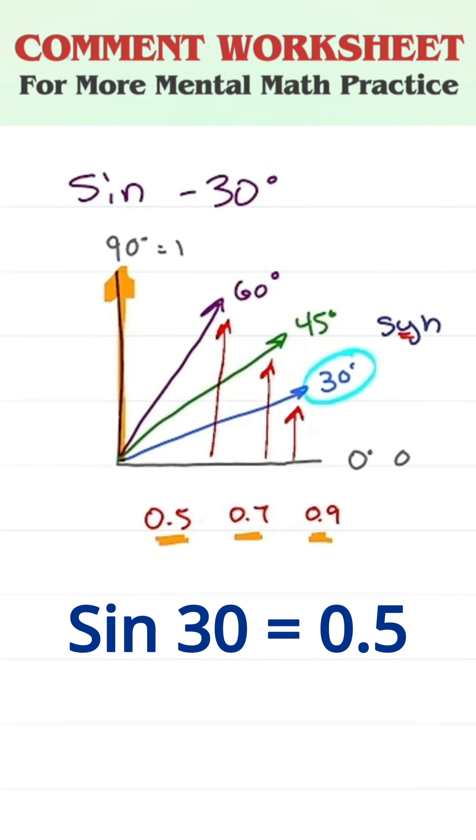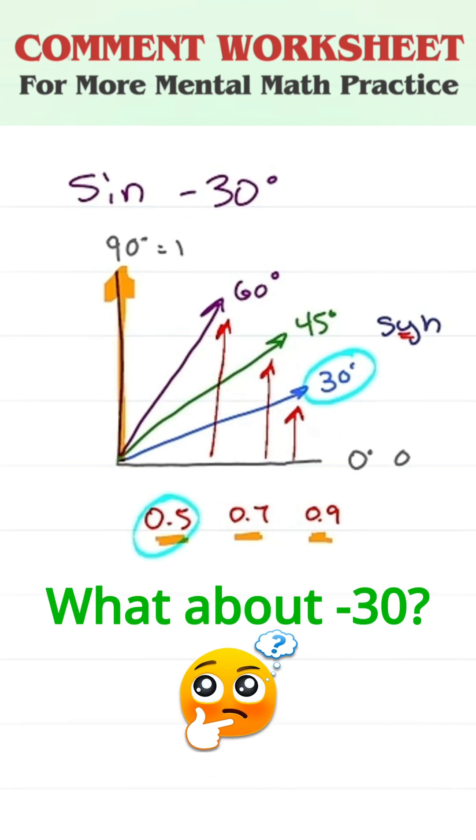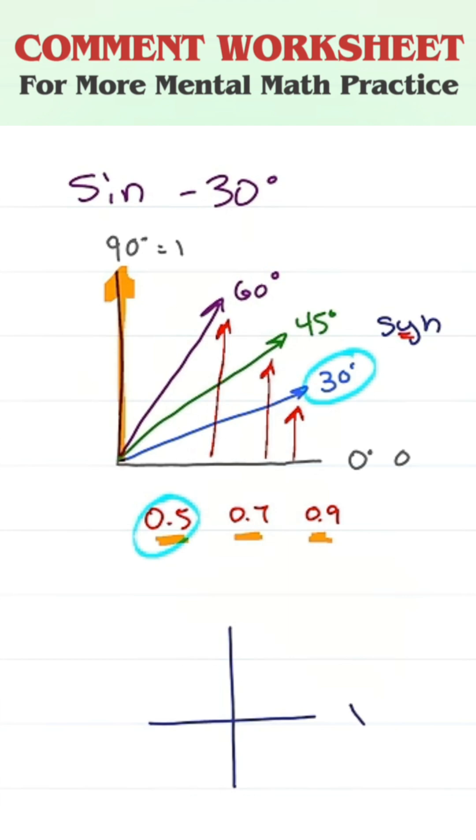So we know that sine of 30 is 0.5, but what about negative 30? On an xy coordinate graph, the positive and negative simply tell me the direction.